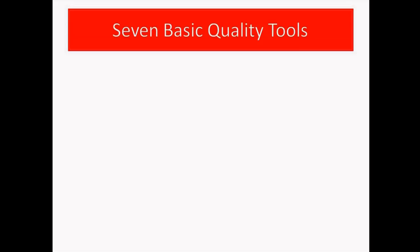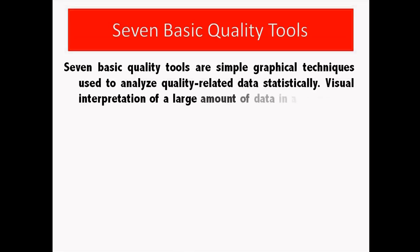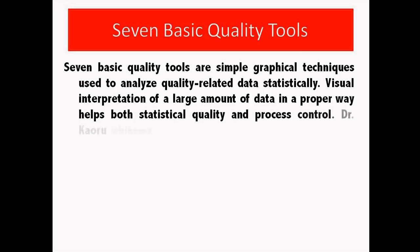Seven basic quality tools are simple graphical techniques used to analyze quality related data statistically. Visual interpretation of a large amount of data in a proper way helps both statistical quality and process control.